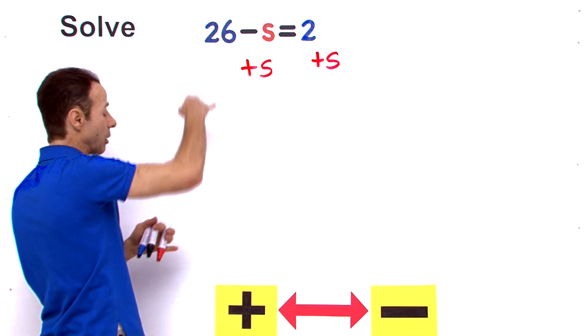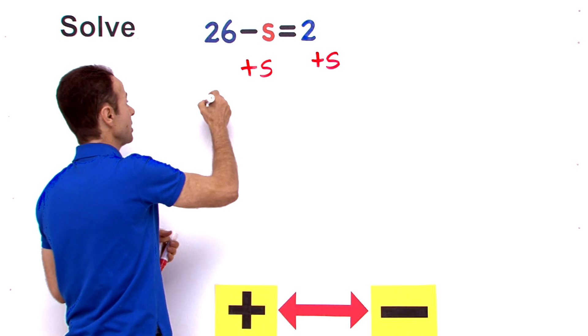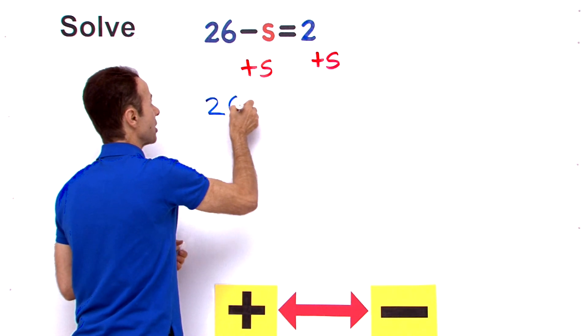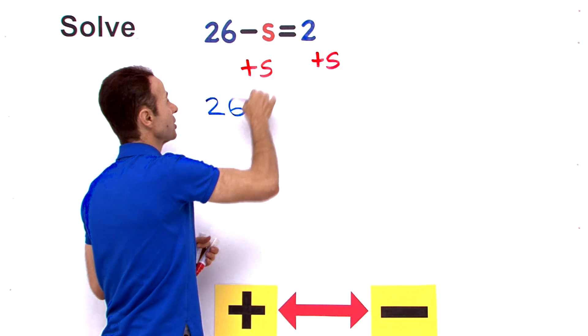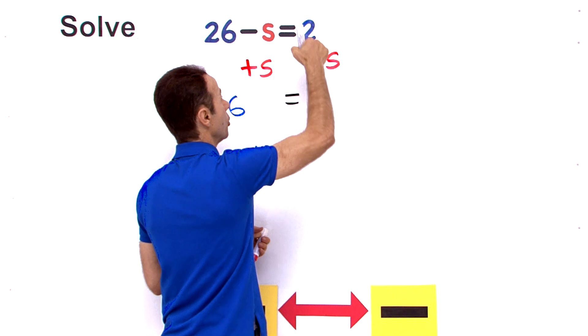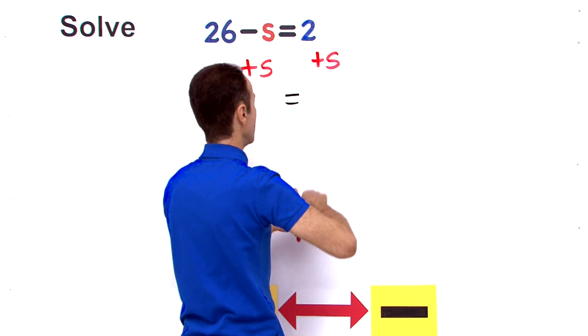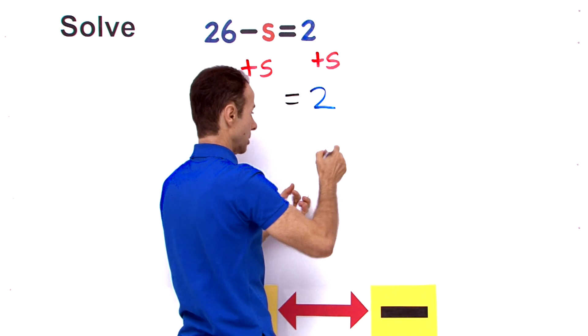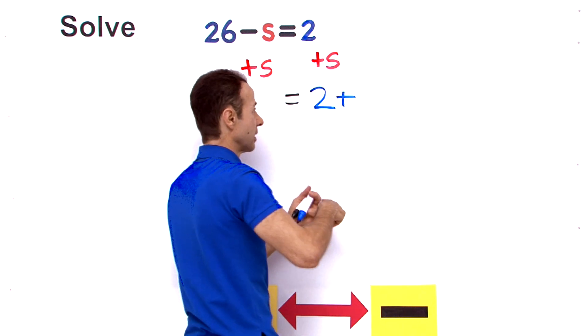Now let's bring down what we have already. We have a 26, so the 26 goes there and minus s plus s that cancels. Bring down the equals. What do we have here? We have 2 plus s.